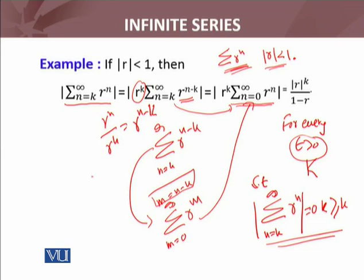And we have seen that summation n equals zero to infinity r^n converges to 1/(1-r). We proved this. So the entire series value is |r|^k divided by (1-r), which I have substituted here.